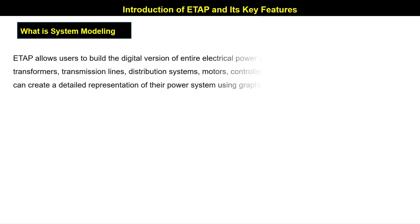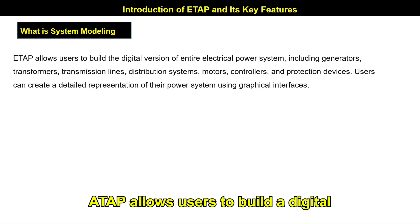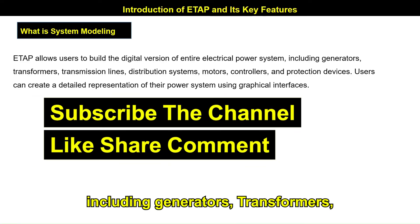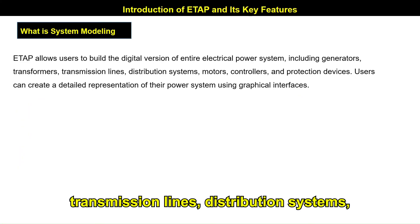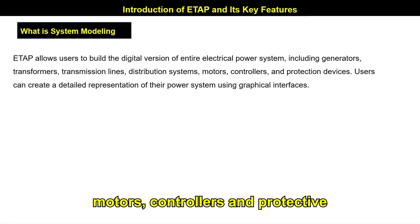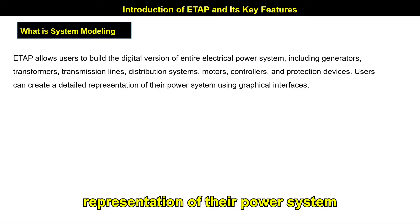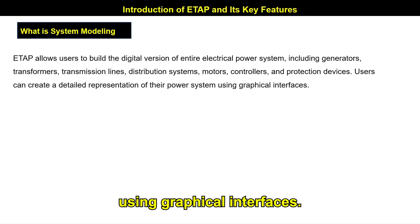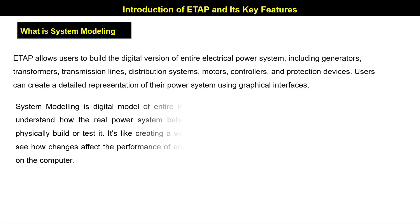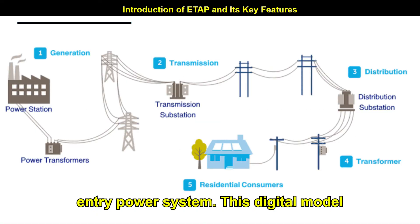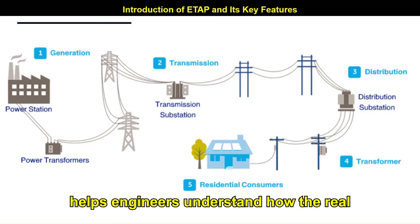What is system modeling? ETAB allows users to build a digital version of an entire electrical power system, including generators, transformers, transmission lines, distribution systems, motors, controllers, and protective devices. Users can create a detailed representation of their power system using graphical interfaces. System modeling is essentially a digital model of an entire power system.